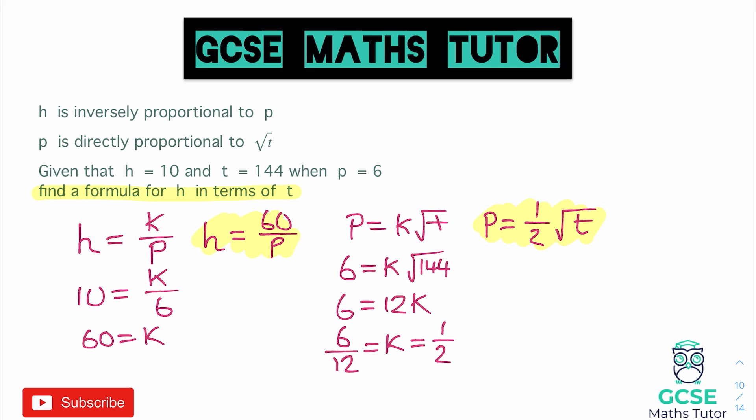So now we've got our two formulas. I don't actually need any of this working out now. So I'm going to get rid of all of this. And we're just going to focus on these two formulas. So for these two formulas here, how are we going to get a formula for h in terms of t? Now you can see in the first formula it says that h is equal to 60 divided by p. And our second one actually tells us that p is equal to a half root t.